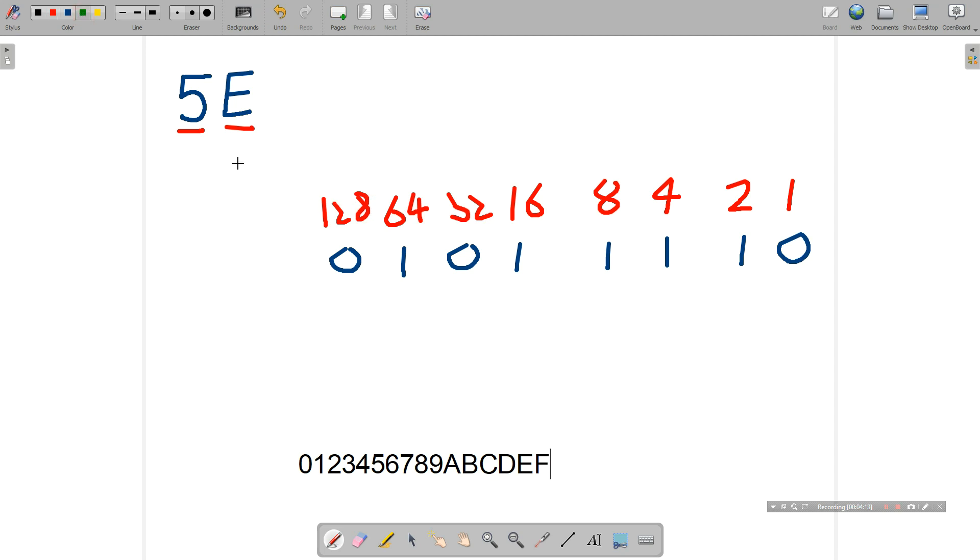And now all we have to do is look at each of these numbers with a 1 underneath them and add them up. So these are the values that have a 1 underneath them. So let's add them up. 64 plus 16 is 80, plus the 8 is 88, plus the 4 is 92, plus the 2 is 94. And so the answer is that 5E in hexadecimal is 94 in decimal.